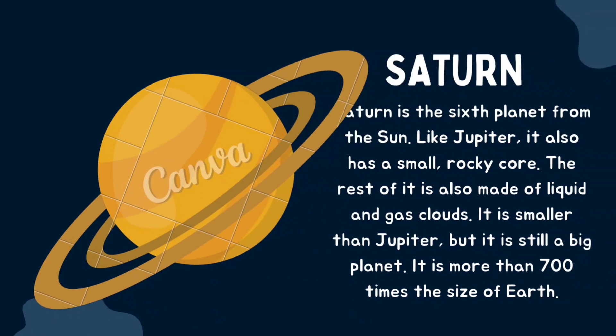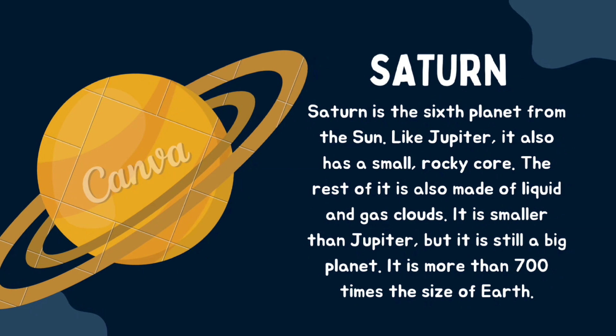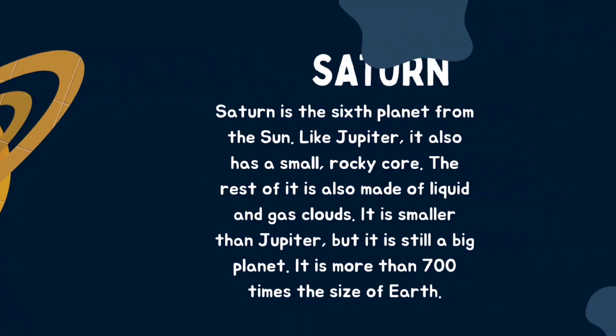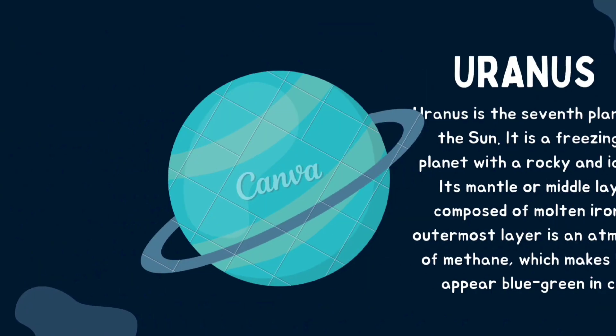The next planet is Saturn. Saturn is the sixth planet from the sun. Like Jupiter, it also has a small rocky core, and the rest of it is made of liquid and gas clouds. It is smaller than Jupiter but still a very big planet — more than 700 times the size of Earth. It has rings, so it is also known as the ring planet.